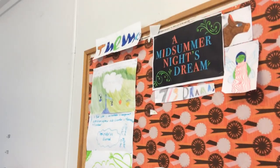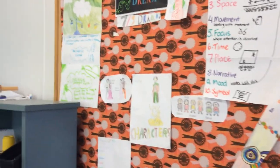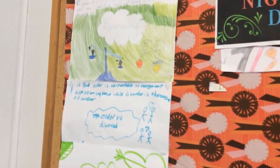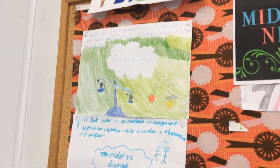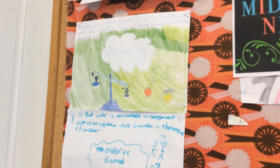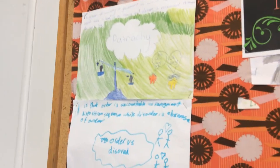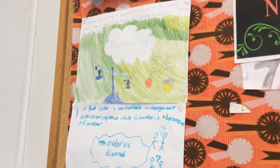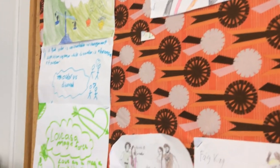More importantly, they've looked at the themes, because we're going to choose one of these themes to focus on in our own play. The first theme they've identified is patriarchy — a system of society or government in which the father or eldest male is head of the family and makes all the decisions. In the play, they've identified this when the father says to his daughter, 'You must marry who I say, otherwise you'll be put to death.'